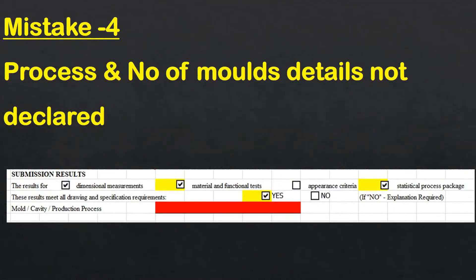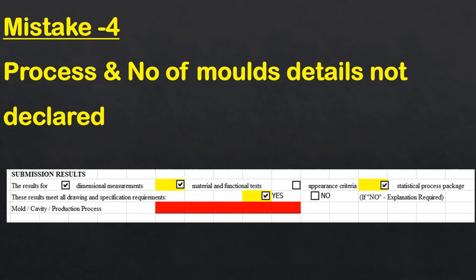Mistake number four: people miss mentioning the number of molds or cavities used in the process, as well as the production process details — whether it's manufacturing, injection molding, die casting, hammer forging, or any other process. Whatever process is followed must be mentioned along with the number of tools, molds, and cavities, since cavities and molds are majorly provided by the customer — so that information must be recorded.